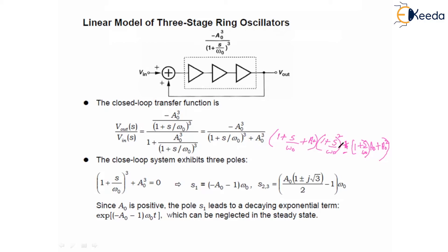We can find the values of these poles. The first pole is s₁ = −(a₀ + 1)·ω₀. The other poles are a complex pair: s_{2,3} = [(a₀/2) − 1 ± j·(a₀√3/2)]·ω₀. Since a₀ is positive — we calculated the gain per stage to be 2 — the pole s₁ leads to a decaying exponential term, exp(−(a₀−1)·ω₀·t), which can be neglected in steady state. Now let us analyze the location of these two complex poles and see how the circuit will oscillate.